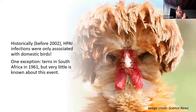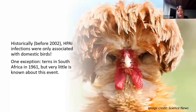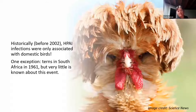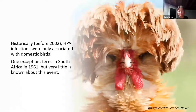This is where it gets really interesting — historically, high path AI infections were only associated with domestic birds. We would detect high path AI in wild birds periodically but weren't seeing significant infections, mortality, or pathogenicity. There was one exception: a die-off of terns in South Africa in 1961, but very little is known about that event. Historically, we weren't really seeing much by way of mortality in wild birds with high path AI prior to 2002.